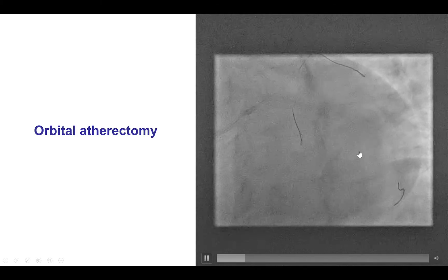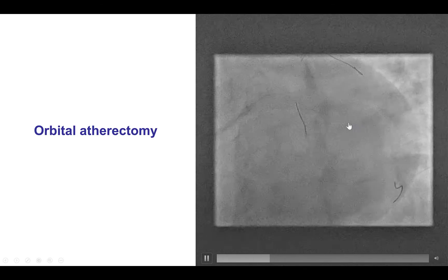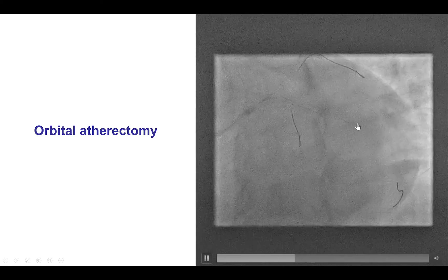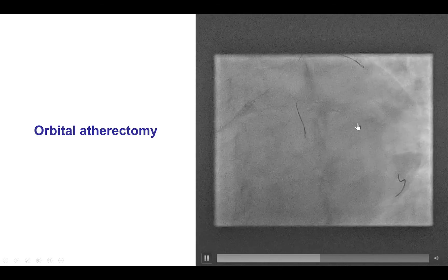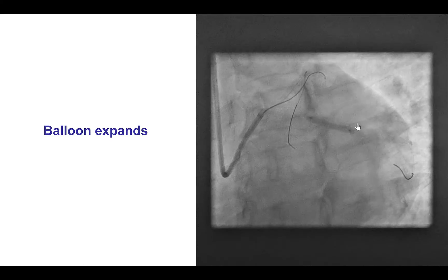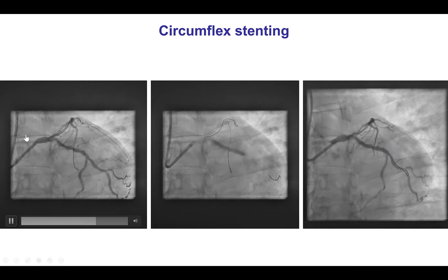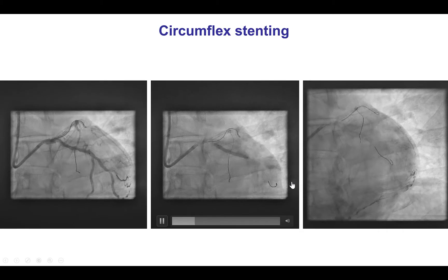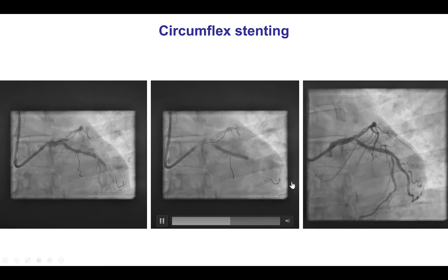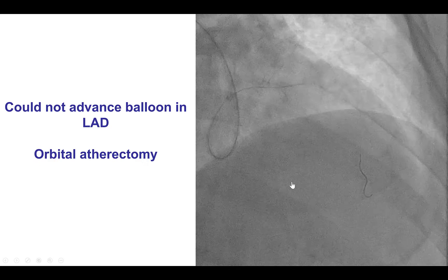We used orbital atherectomy over the viper flex-deep guide wire that successfully modified the lesion after performing multiple passes. The balloon now expanded well and we placed a drug-eluting stent obtaining a nice result. The circumflex was now treated.